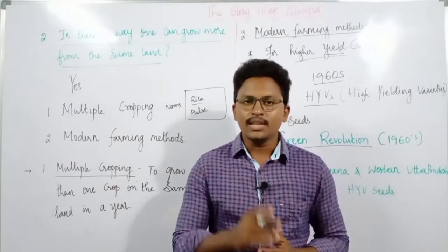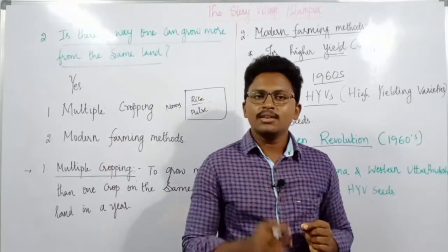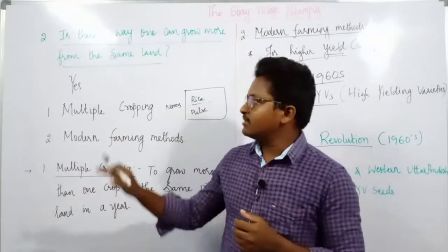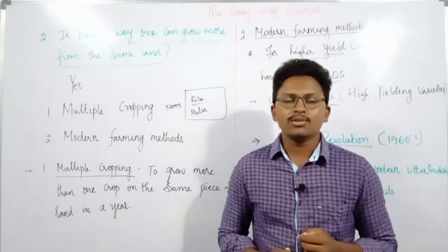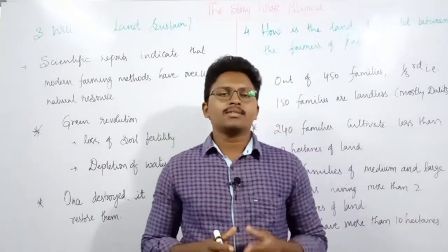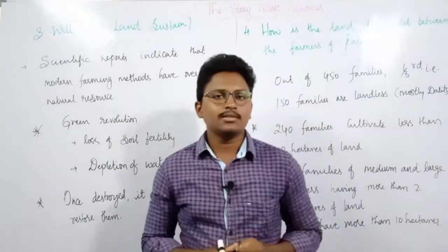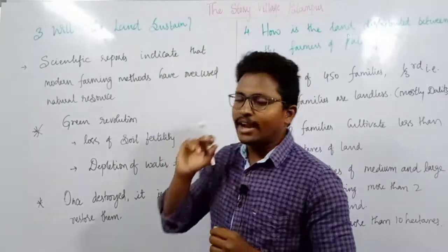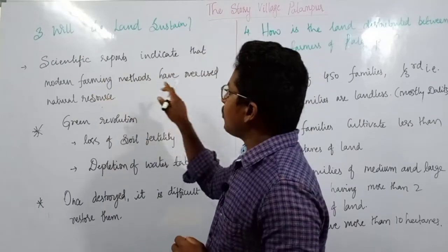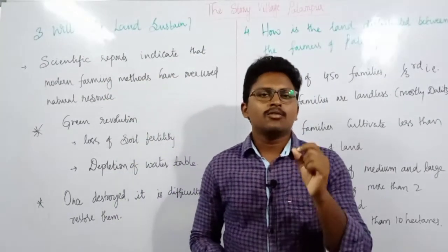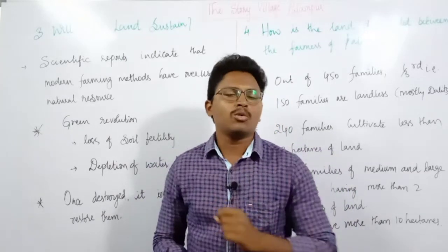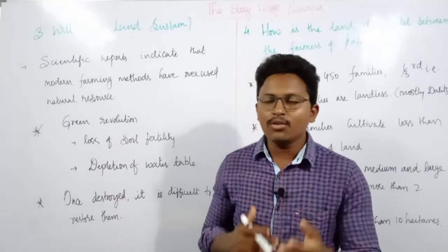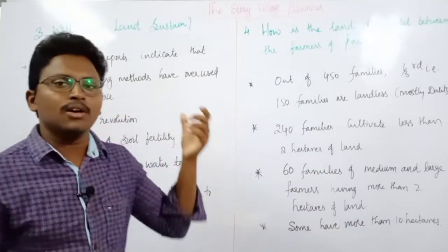The next question is: will the land sustain if we use modern farming methods as well as multiple cropping? Scientific reports indicate that modern farming methods have overused natural resources. Whenever we follow modern methods of farming we are actually overusing natural resources more than required. For example, with the Green Revolution and HYV seeds, these seeds mainly require more fertilizers, pesticides, and water.